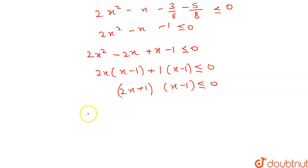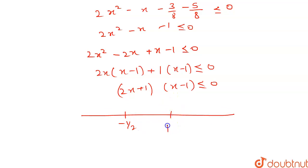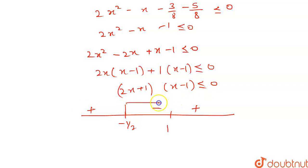Draw a number line and mark the critical points: -1/2 and 1. The sign will be plus, minus, plus. We need this quantity less than or equal to 0, so the favorable area gives x ∈ [-1/2, 1].